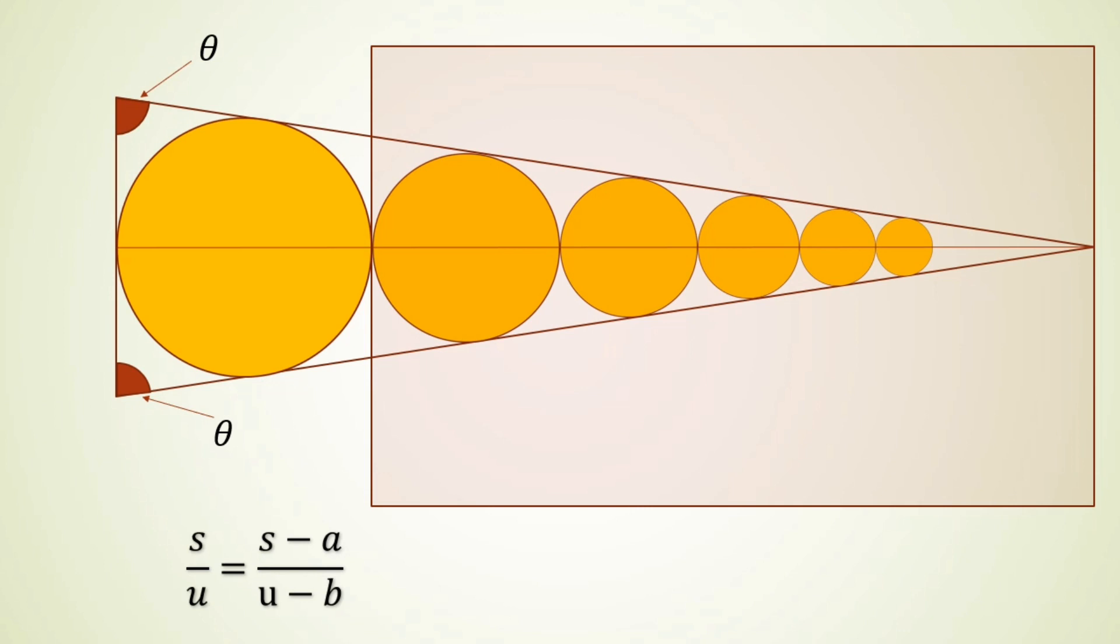Then we get s upon u is equal to s minus a upon s minus u minus b. And with this information we can conclude that s upon u is equal to a upon b.